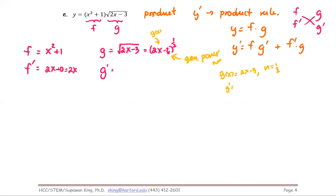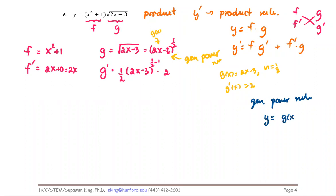In this case, using yellow to distinguish, the inner function gx is two x minus three and n is one half, so the derivative of the inner part is two. Using the general power rule: y prime equals n times gx to the power n minus one times g prime of x.